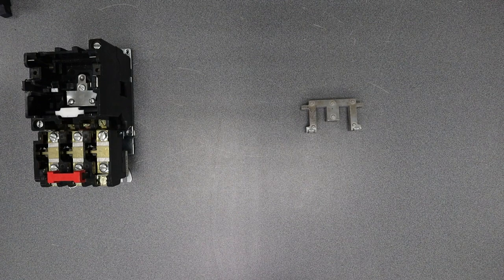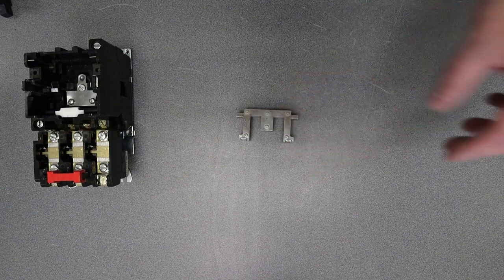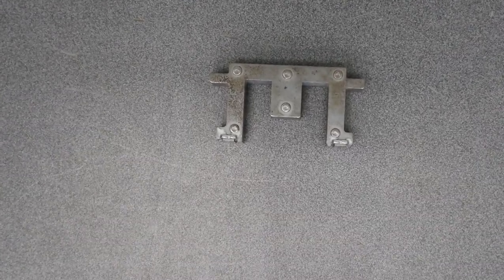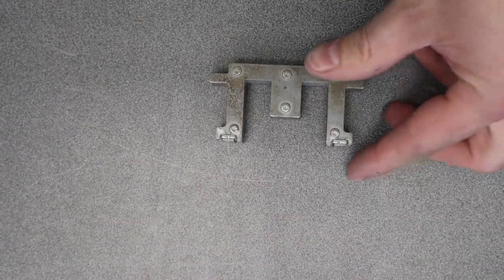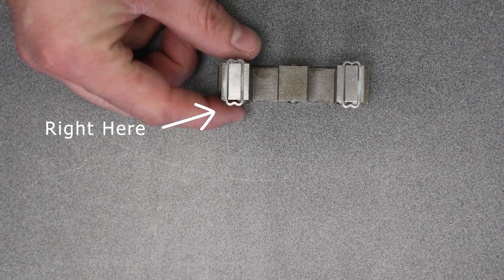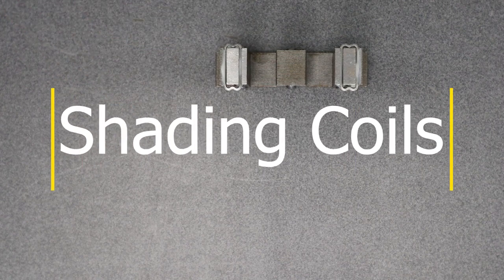But what I want to take a look at here is I want to take a closer look at my core. So what we see on the core is we have these two little rings in the end of the core right here. Now those are called my shading coil.